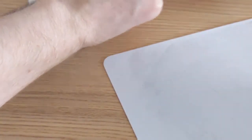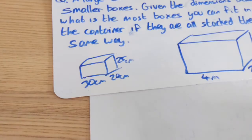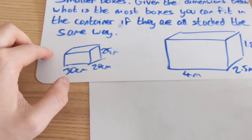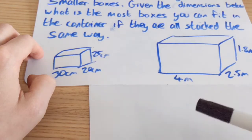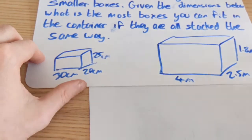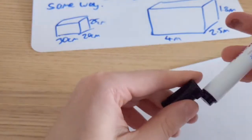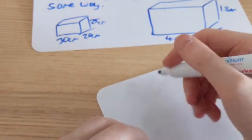I'm going to have a look at the dimensions that we've got. I've got 30cm, 20cm and 25cm are the dimensions of our smaller box and our larger box is 4m by 2.5m by 180cm. I'm going to draw a table out and I'm going to change all of that into centimeters.